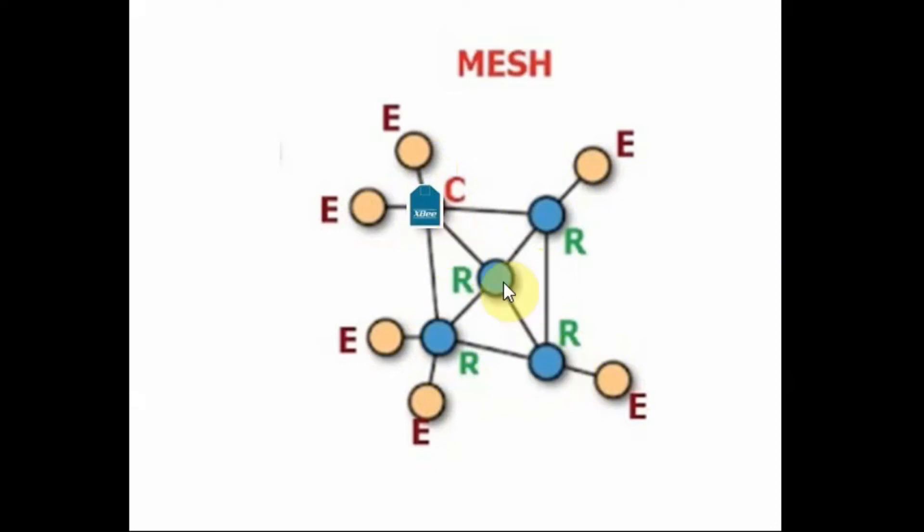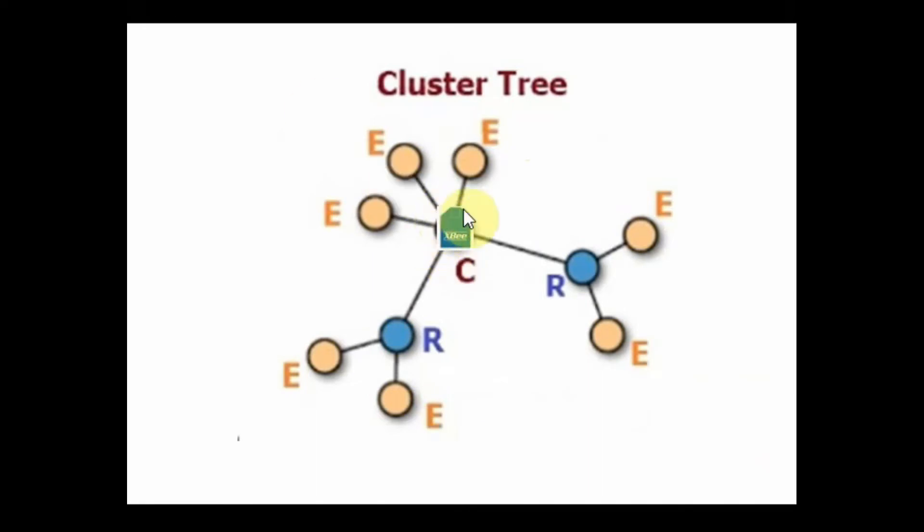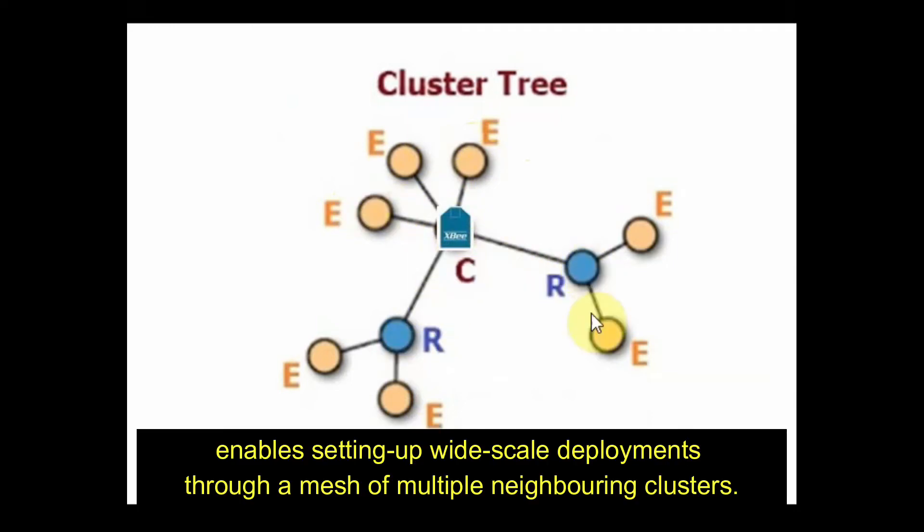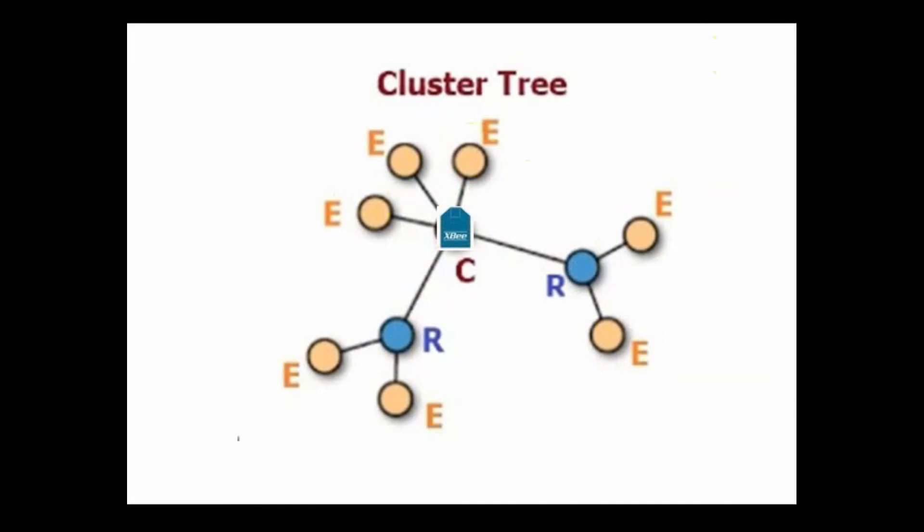The final one is cluster tree which in its layout is similar to the mesh network. It employs coordinator and router to pass messages to one another and to child end devices. But the geometry of PAN is stretched out so that parts of the network are outside the range of other parts of network.